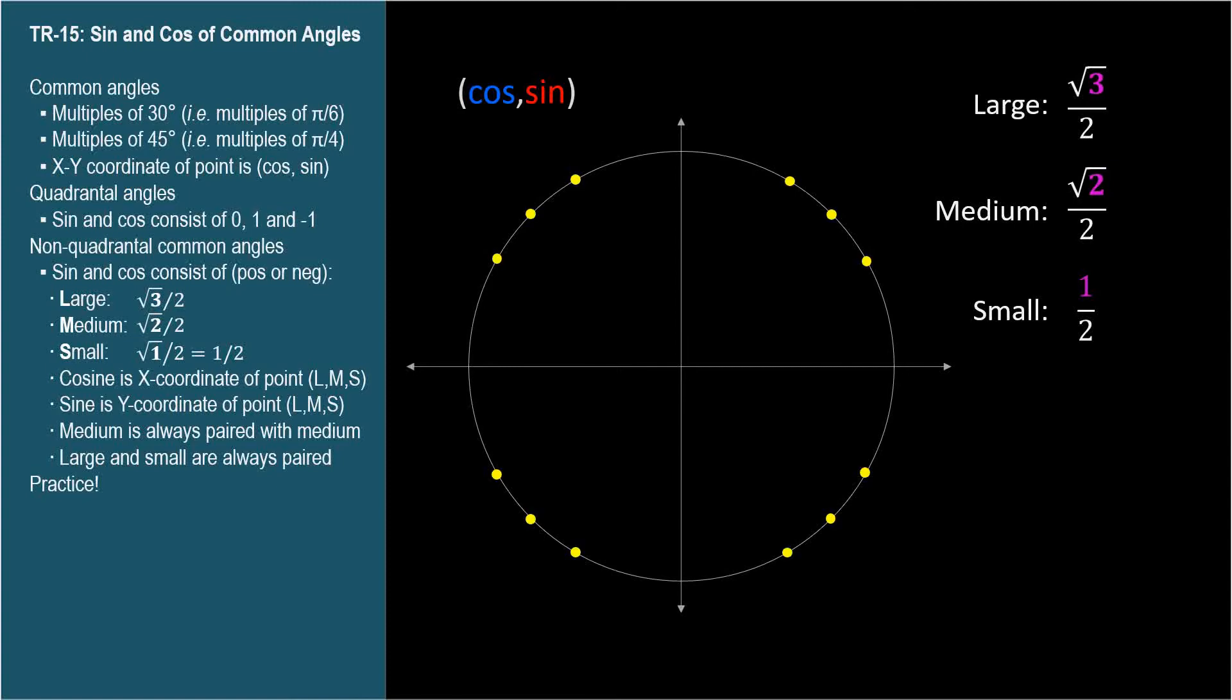See the point in your head, then describe the x and y-coordinates to get there from the origin, in terms of large, medium, and small. This will give you the cosine and sine of the angle.